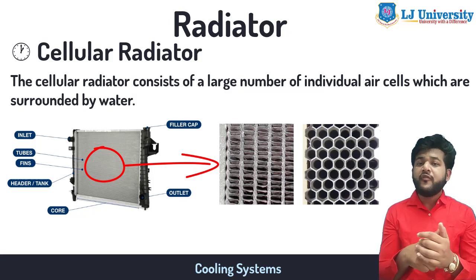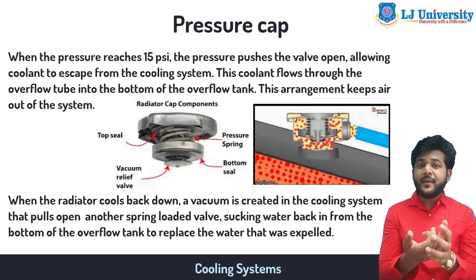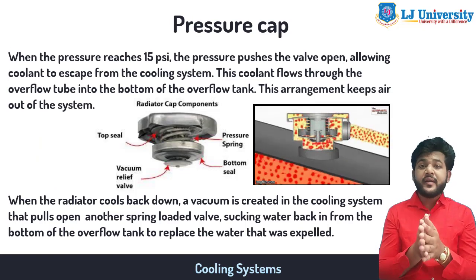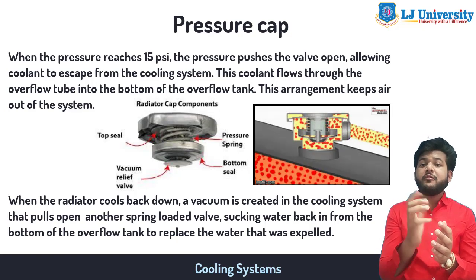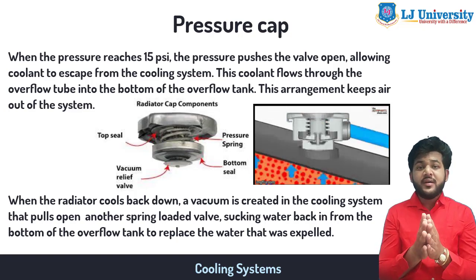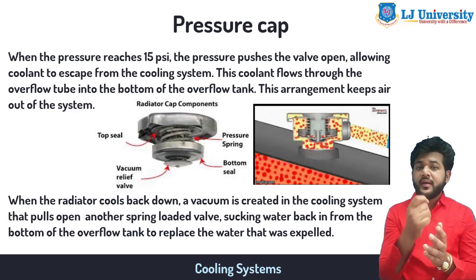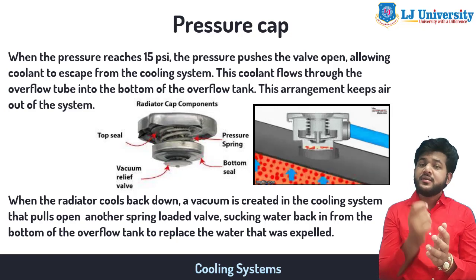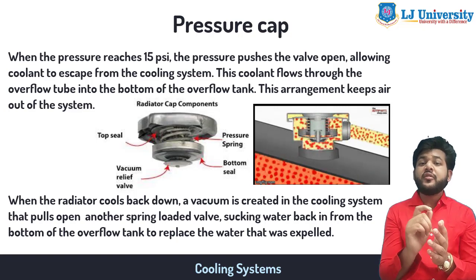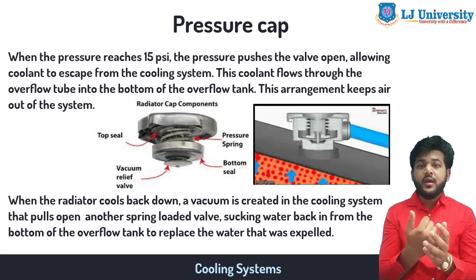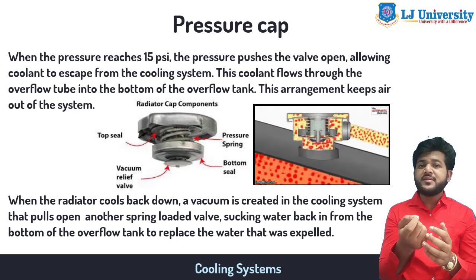The second part is the pressure cap over the radiator. The radiator cap increases the boiling point of the coolant by approximately 25 degrees — the same way a pressure cooker increases the boiling temperature of water. This cap acts as a pressure release valve with a spring, and in a car it is usually set at 15 psi.